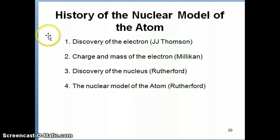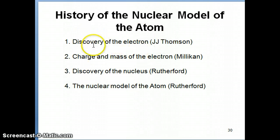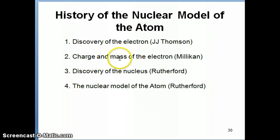Hi everyone. We're going to continue with our discussion on the history of the nuclear model of the atom. In the previous video we talked about how the electron was discovered by JJ Thomson and the experiment with the cathode ray tube. In this video we're going to spend some time talking about how we discovered the charge and mass of the electron — an experiment performed by Robert Millikan.